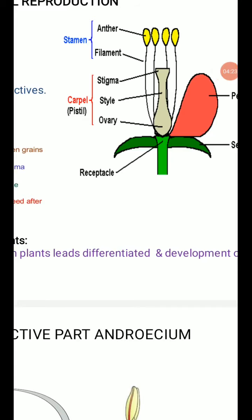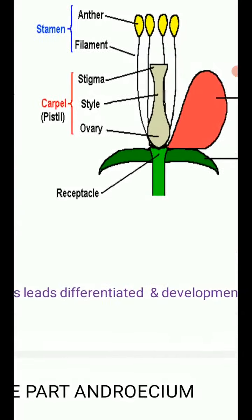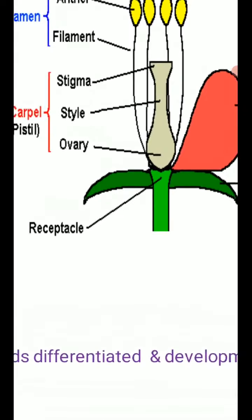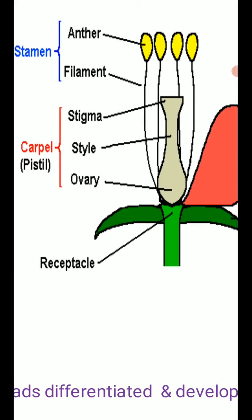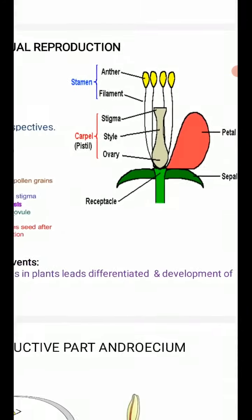The first stage is pre-fertilization structures and events. Normally it is the condensed shoot system, but here they will be having some hormonal and structural changes in the plant. That tissue gets differentiated into the floral primordium, and some events are involved before the fertilization — those events we can discuss in this chapter.